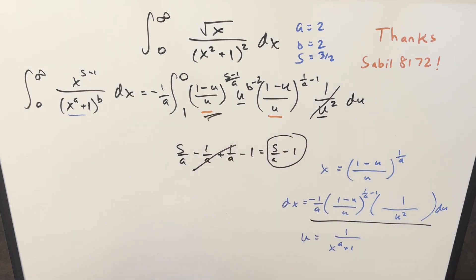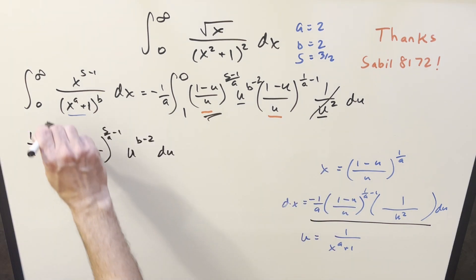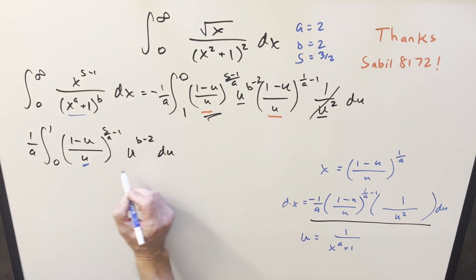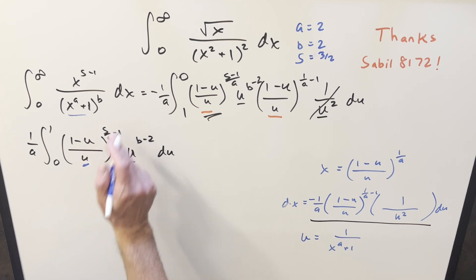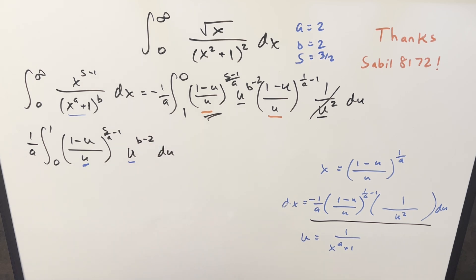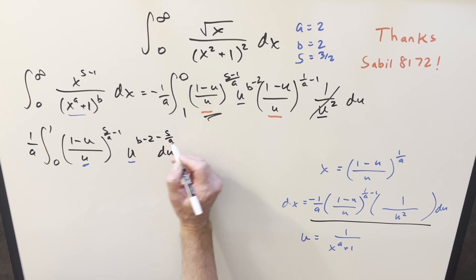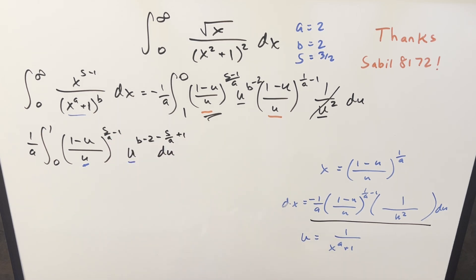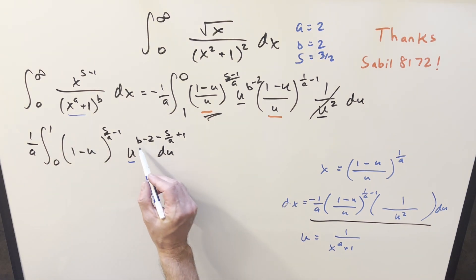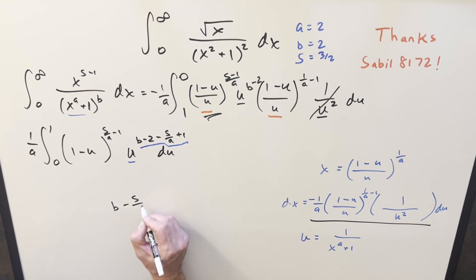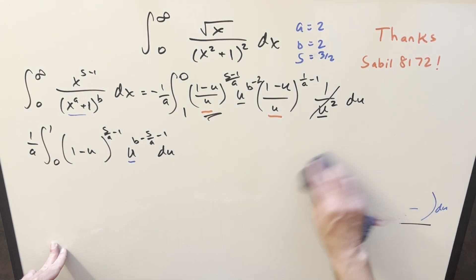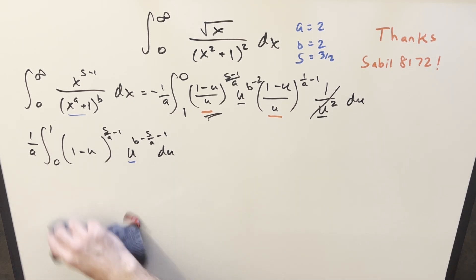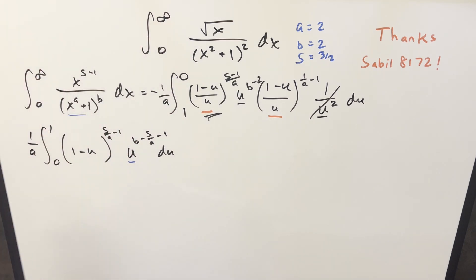Using the minus sign to flip our bounds, we go from 0 to 1. Combining the u terms and subtracting the exponent, this becomes minus s/a, and minus times minus gives plus 1, which we can clean up. Over here we just have the (1 minus u) factor. The final exponent on u is b minus s/a minus 1. There's a lot of algebra here, and this is maybe not the fastest way — for simpler cases like 1 over x squared plus 1, you'd just use the arctan formula. But this approach gives us the general formula.